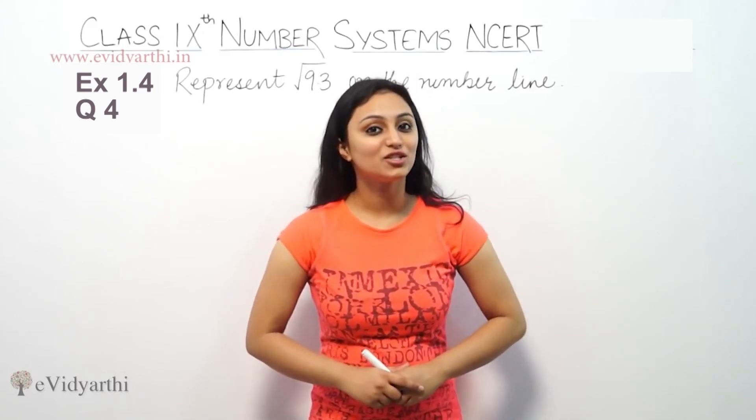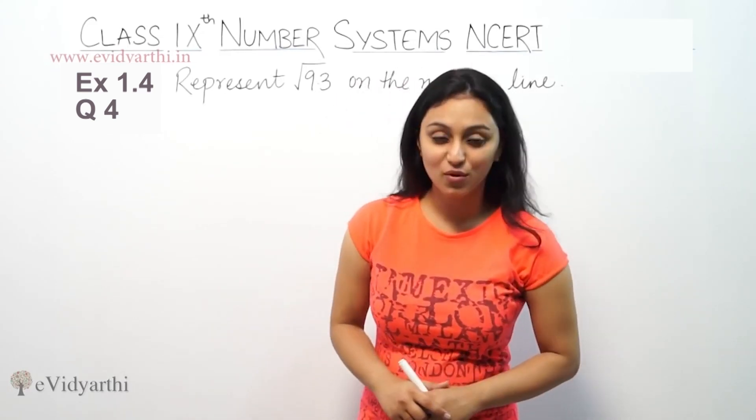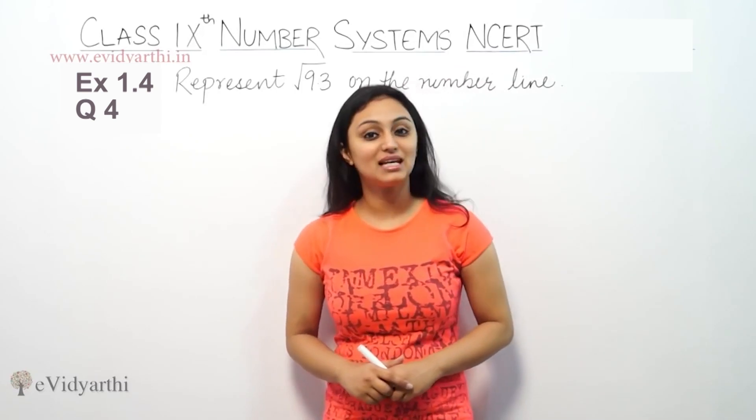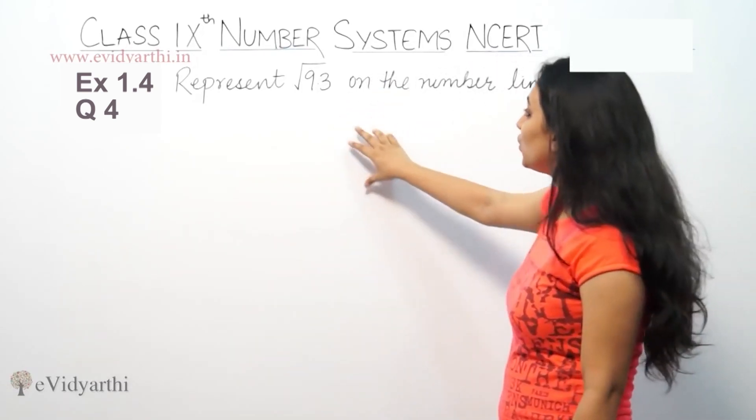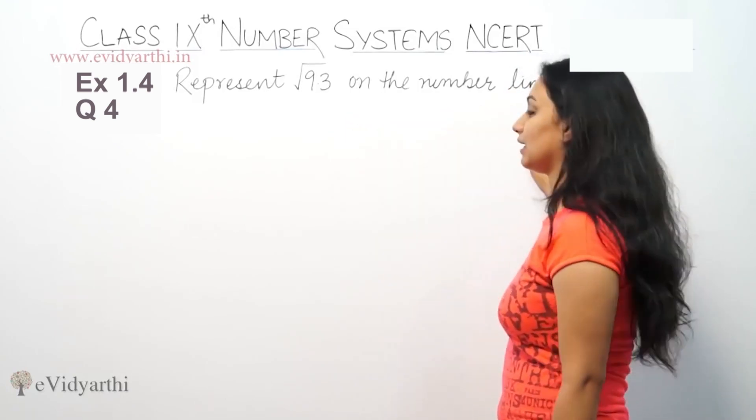Hi, this is Khujgu with a new question on number systems. This is question number 4 of exercise 1.5 from NCERT, page number 24. It says represent root 9.3 on the number line.